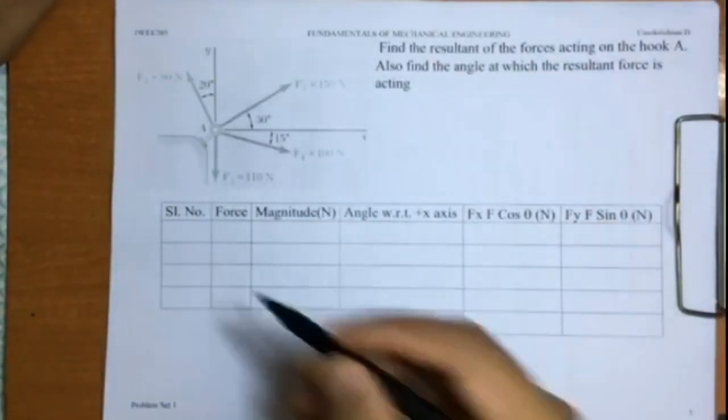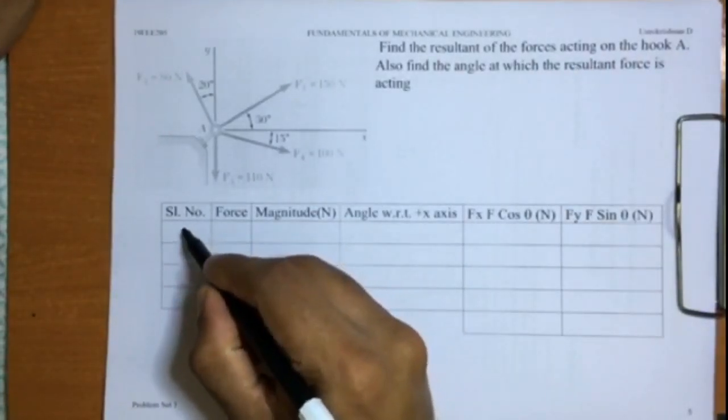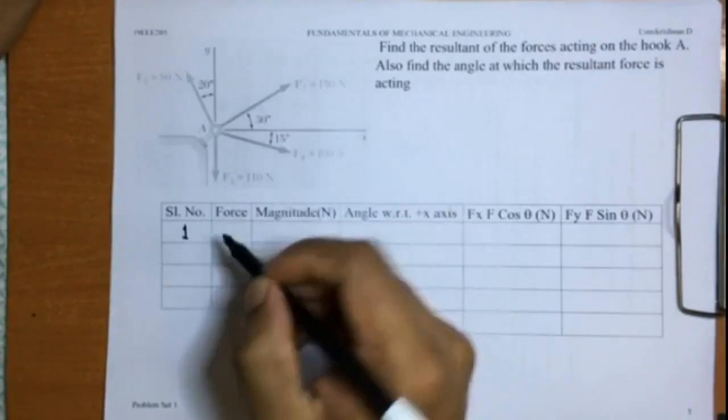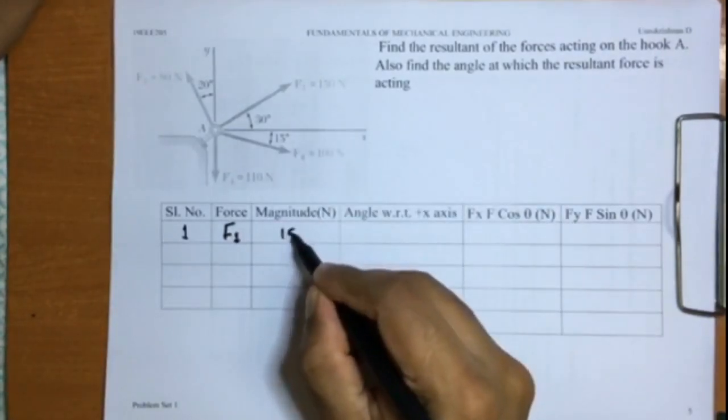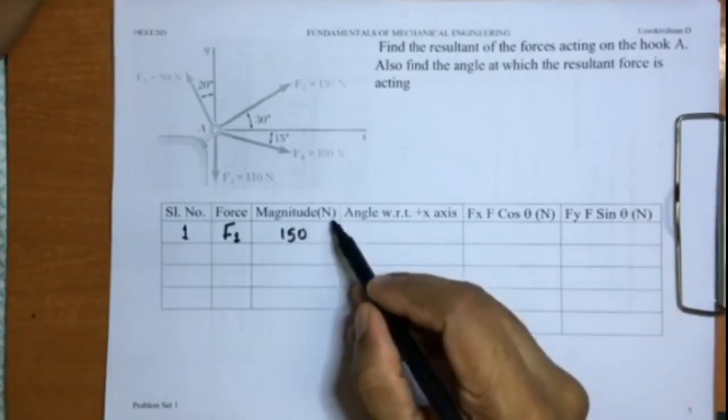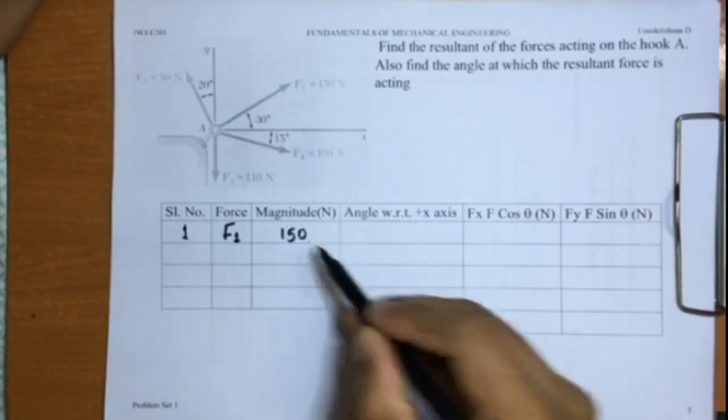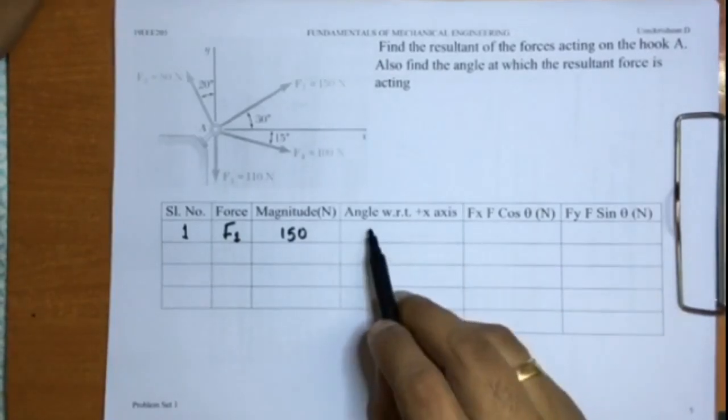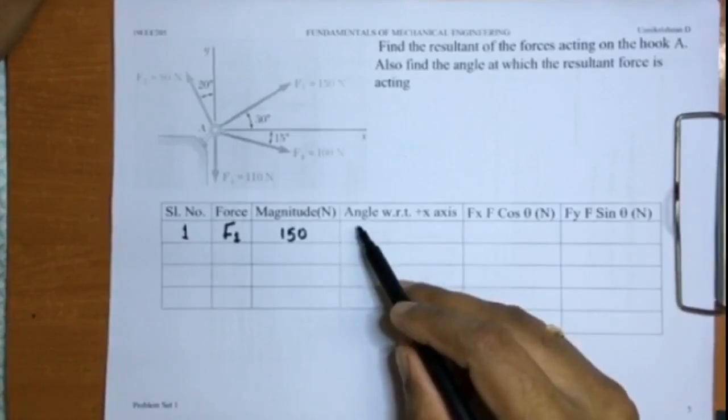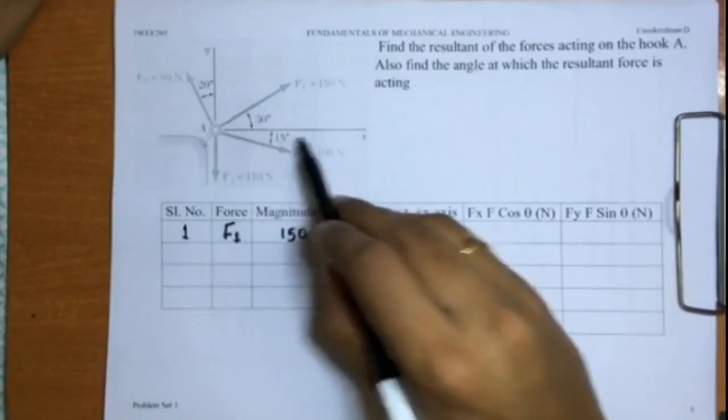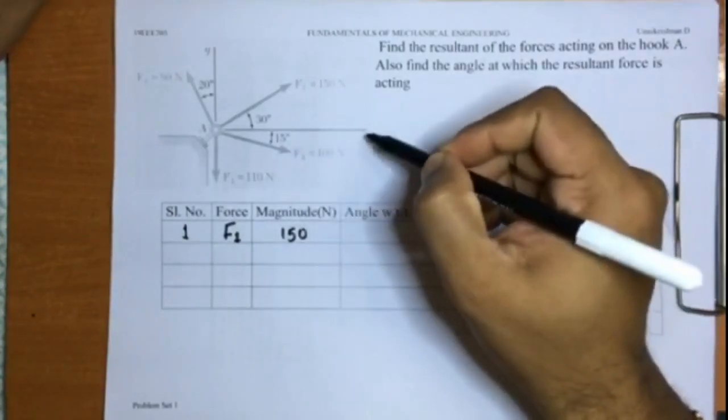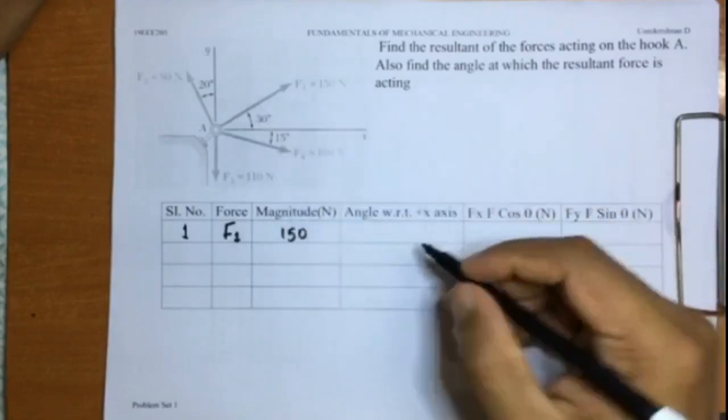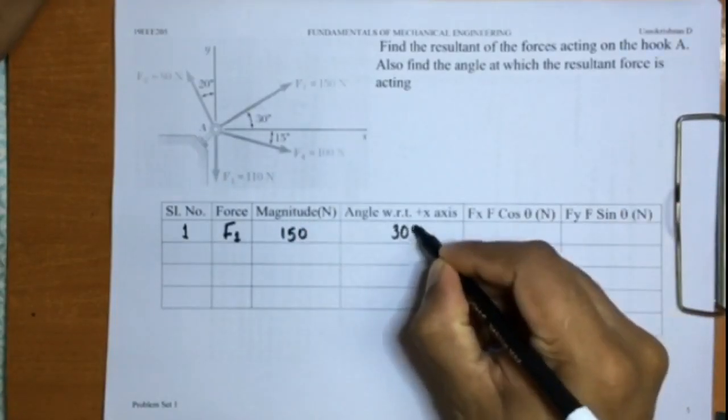Let us write these forces one by one so that we can have clarity. Serial number one, the force F1, the magnitude is given as 150 newtons. The units are written here, so I need not write newtons again. Now for simplicity and consistency, I measure all the angles with respect to the positive x-axis in the counter-clockwise direction. For F1 with respect to the x-axis, it is already given as 30 degrees, so I will write that here: 30 degrees.